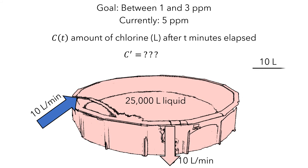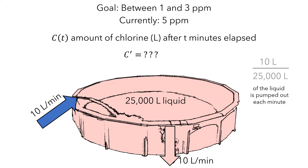That is, 10 out of the 25,000 liters of liquid is pumped out each minute — equivalent to 0.04% of the liquid in the pool. So that same proportion of chlorine is also pumped out each minute. This tells us that the rate at which the amount of chlorine is decreasing is 0.04%, which as a decimal is 0.0004 of the chlorine currently in the pool. It's negative, measured in liters per minute. So c' = -0.0004c is the differential equation describing the rate of change of chlorine in the pool. Together, we've written differential equations to describe each of these two scenarios.